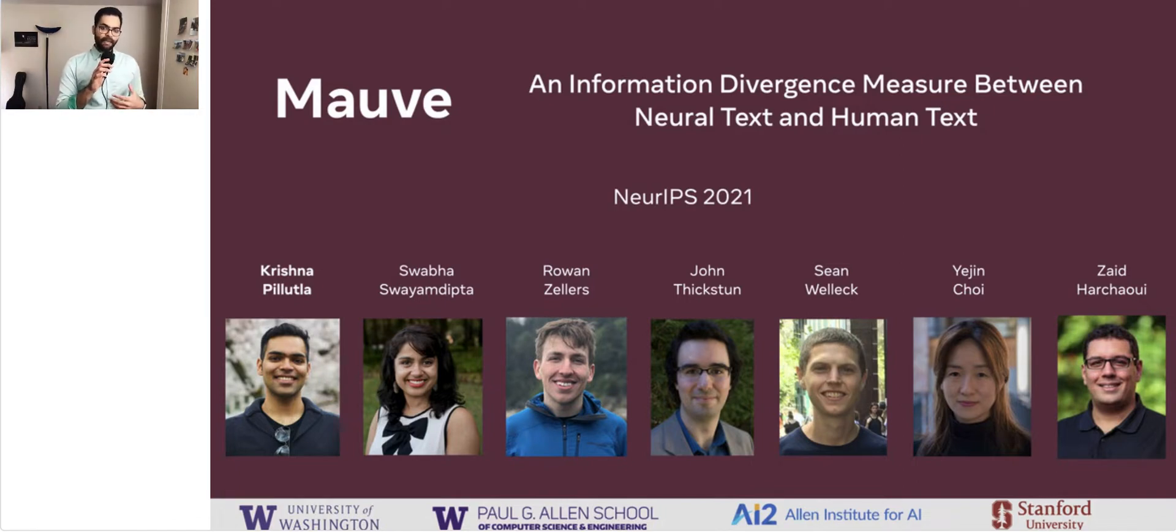My name is Krishna Pilutla. I'm a final year PhD student at the University of Washington. Today, I'm going to talk about MAUVE, an information divergence measure between neural text and human text. This is joint work with collaborators from the University of Washington, the Allen Institute for AI, and Stanford University. Let's get started.